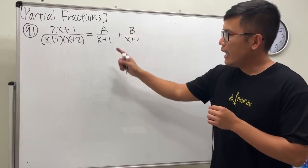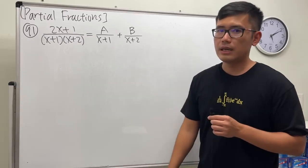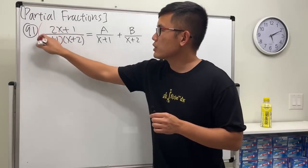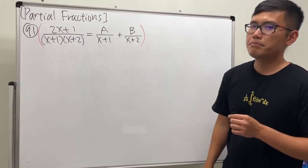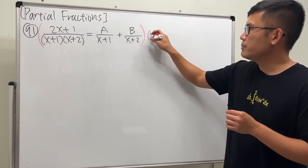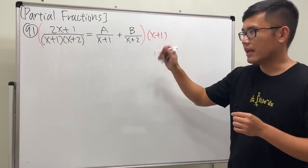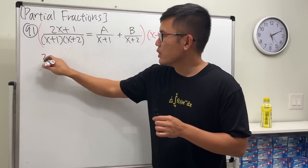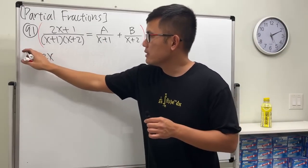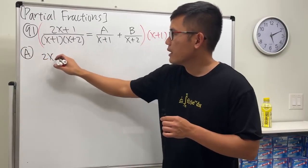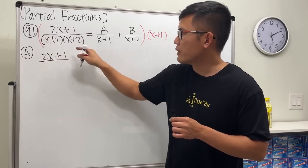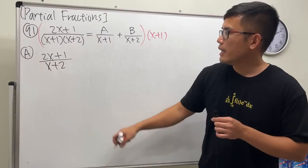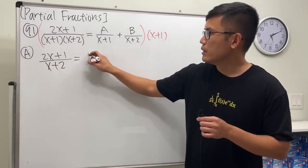I want to solve for a. A has x plus 1 for the denominator. We have an equation, so let's go ahead and multiply by that denominator, namely x plus 1. When we take this and multiply by that, you get 2x. For a, we give 2x plus 1 over this, and that will cancel, so we just have x plus 2, and then this is equal to a.